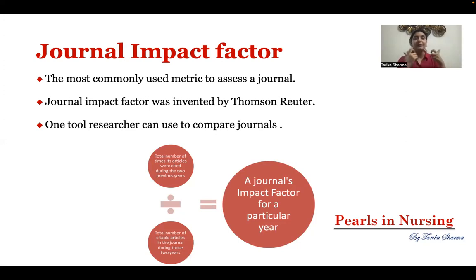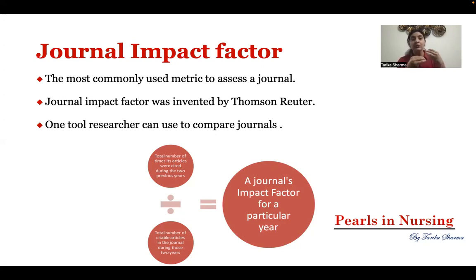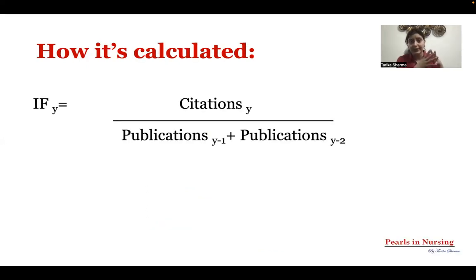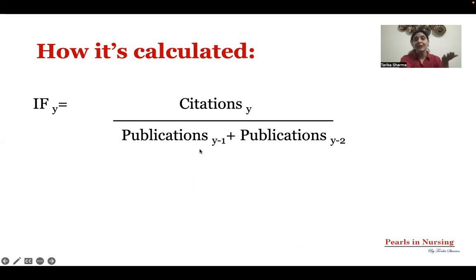By looking at any journal's impact factor, you can tell whether it is a quality journal or not. Researchers can use the journal impact factor to compare journals and decide where to publish their article. Impact factor of any year is calculated as citations in that particular year divided by publications in the last two years.